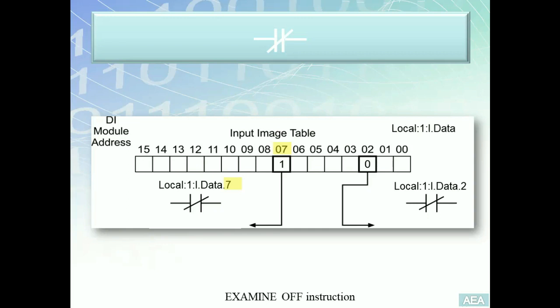Back to the XIO to the left. Right now, what type of input is wired to terminal number seven? I have no idea, but I know something for sure: this input, whatever it is, is currently in the closed state. How do I know this? Because it's currently reading one in the PLC memory.